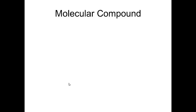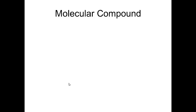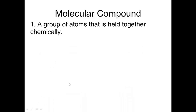So when molecules are going to bond together and different atoms bond together, we will end up making a molecular compound. So a couple ways to define this: a group of atoms that are held together chemically through different kinds of bonds.